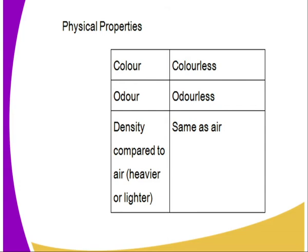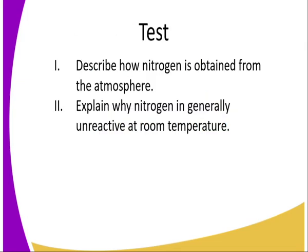The physical properties of the nitrogen gas collected in this experiment: it is colorless and odorless. Its density is approximately the same as that of air, which means we cannot use either downward or upward delivery to collect the gas — hence we collect it over water.